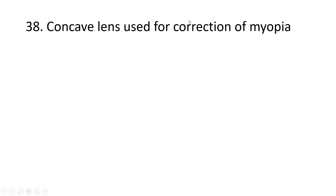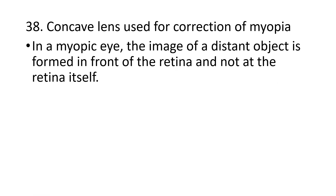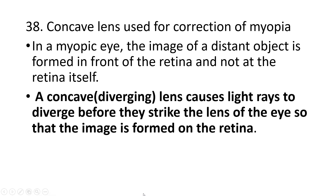A concave lens is used for the correction of myopia. In myopic eyes, the image of a distant object is formed in front of the retina, not on the retina itself. For a clear image, it must be placed on the retina. A concave lens, or diverging lens, causes light rays to diverge before striking the lens of the eye, so that the image is formed on the retina. That is why a concave lens is used to correct myopia.